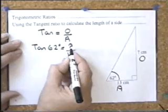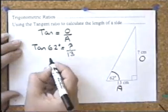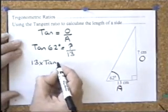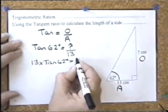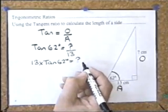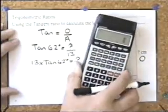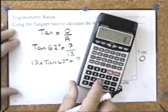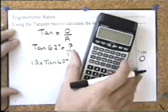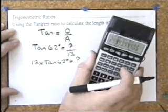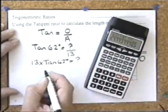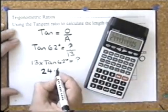If the unknown is on top, we multiply the two pieces of information we have, and that will work out the unknown. Let's use the calculator: 13 multiplied by the tangent of 62 equals 24.4494... Write it all down, but I'll round to a sensible answer.